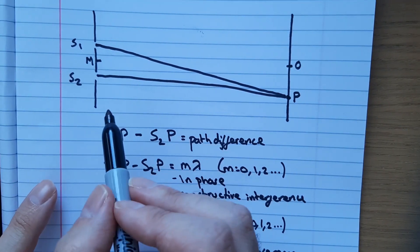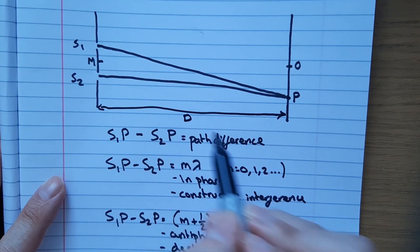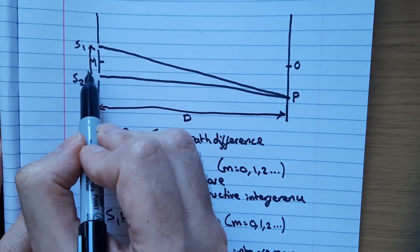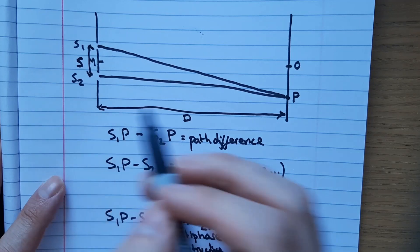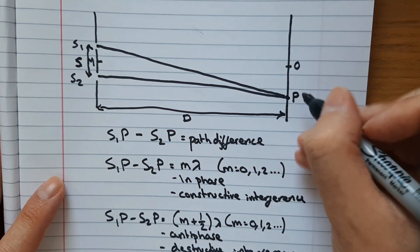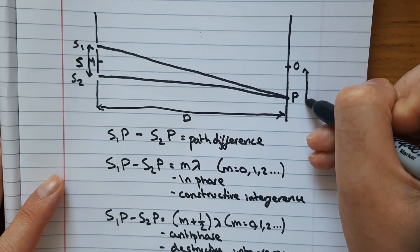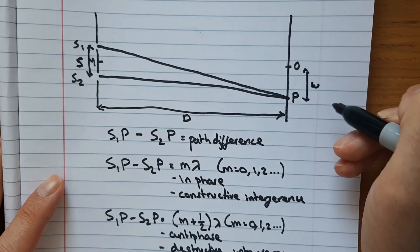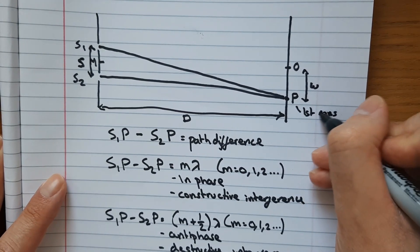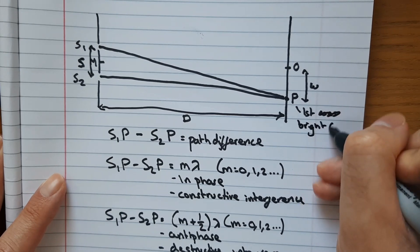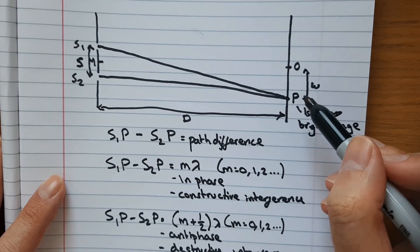To show what the letters in the formula represent: d is the distance from the slits to the screen; s is the distance from the centre of s1 to the centre of s2; and w is the fringe spacing. So if P is the first bright fringe from the centre, the distance from the central bright fringe at zero to P is w.